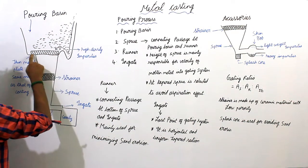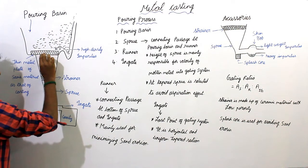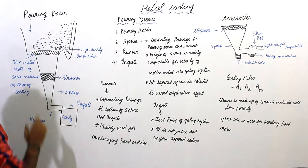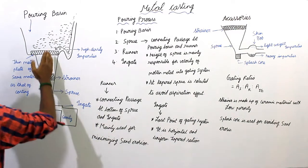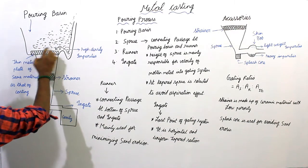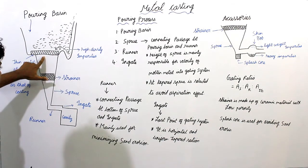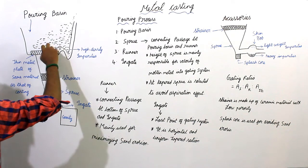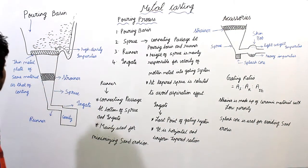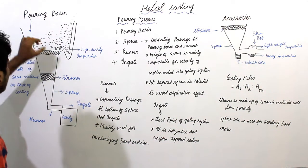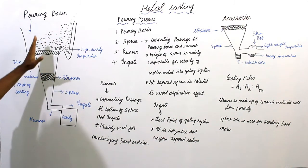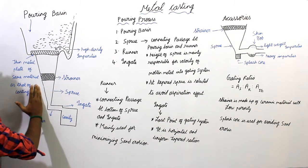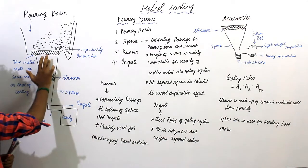This is thin metal plate which is of same material as that of casting or the molten metal. Why we are using this thin plate is, when the molten metal comes into contact with this thin plate and the temperature of the thin plate increases, when the melting occurs, it ensures full flow of molten metal. When the melting of this thin plate occurs, it ensures the full flow of molten metal into the sprue. It avoids oxidation effect.